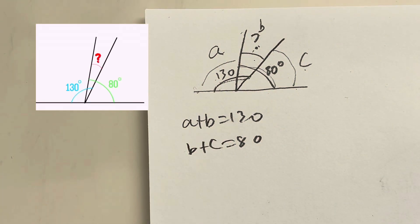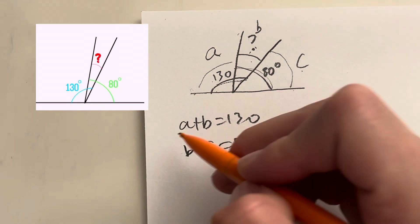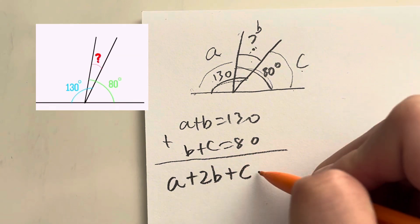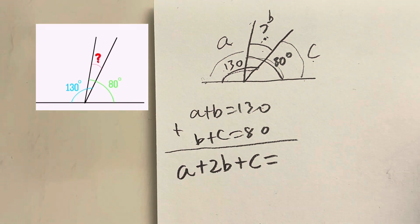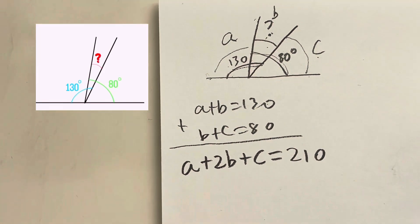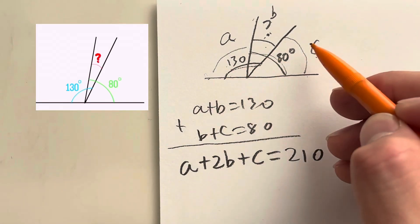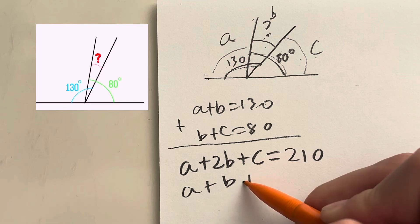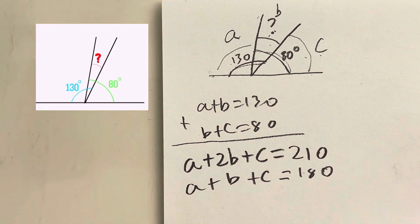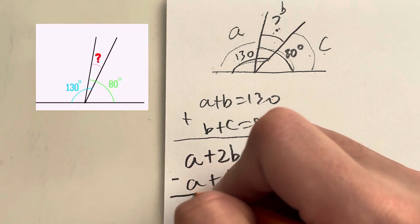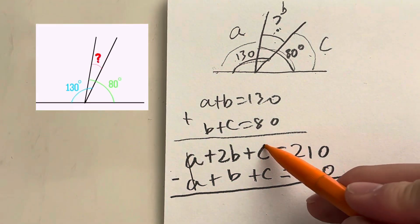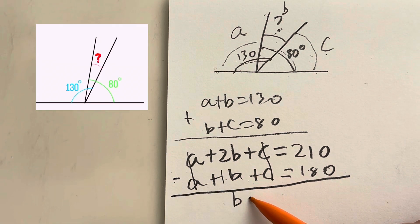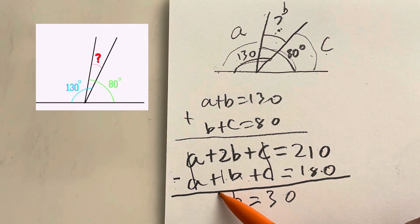Now I'll solve this by adding the two equations. That gives A plus 2B plus C equals 130 plus 80, which is 210. I also know that A plus B plus C forms a straight line, which sums to 180 degrees. Subtracting: A and C cancel out, and 2B minus B leaves just B. So B equals 210 minus 180, which is an answer of 30.